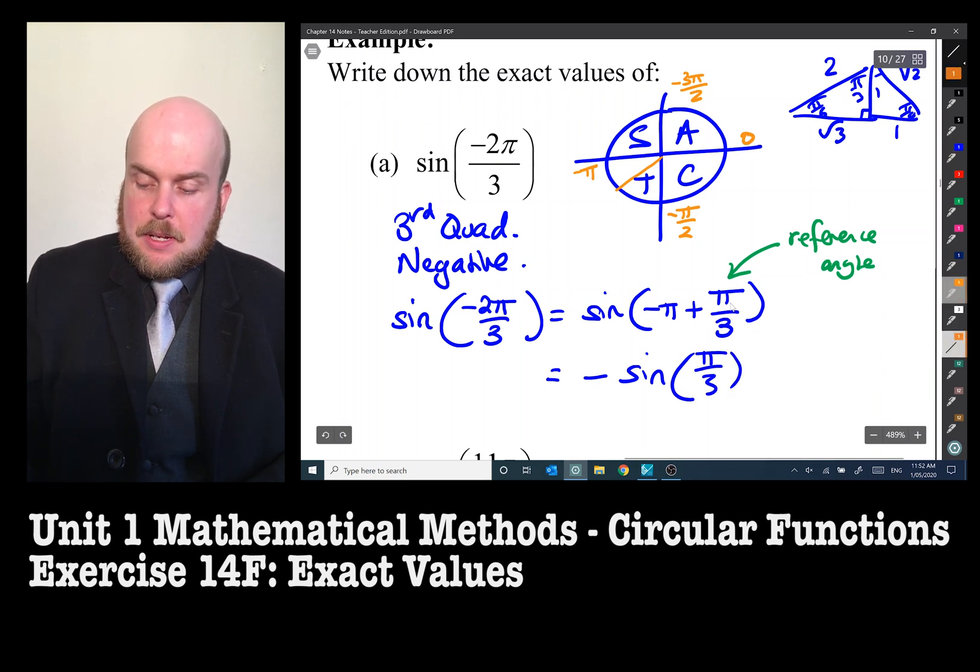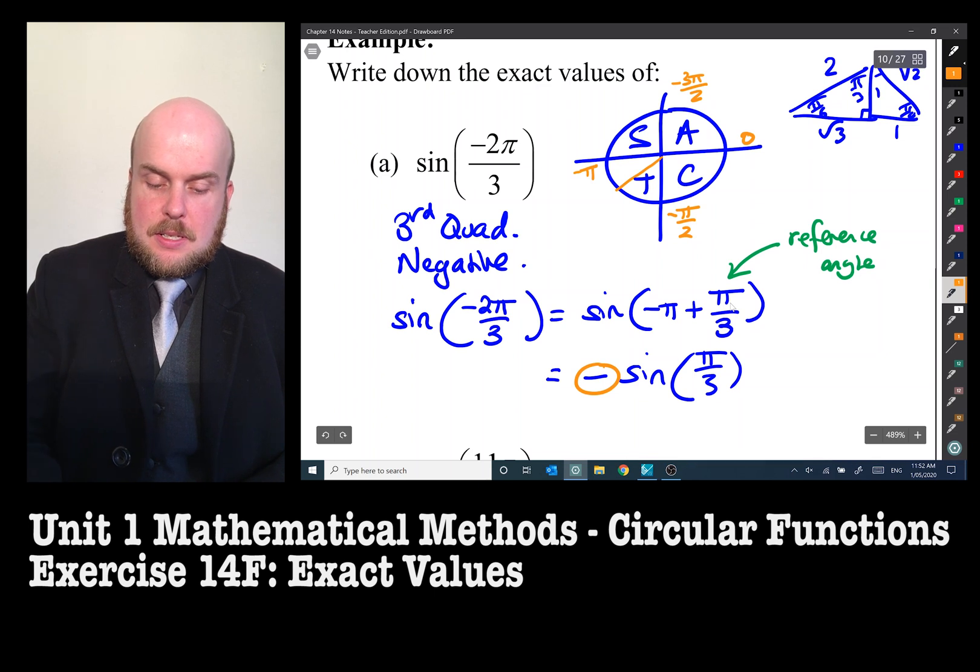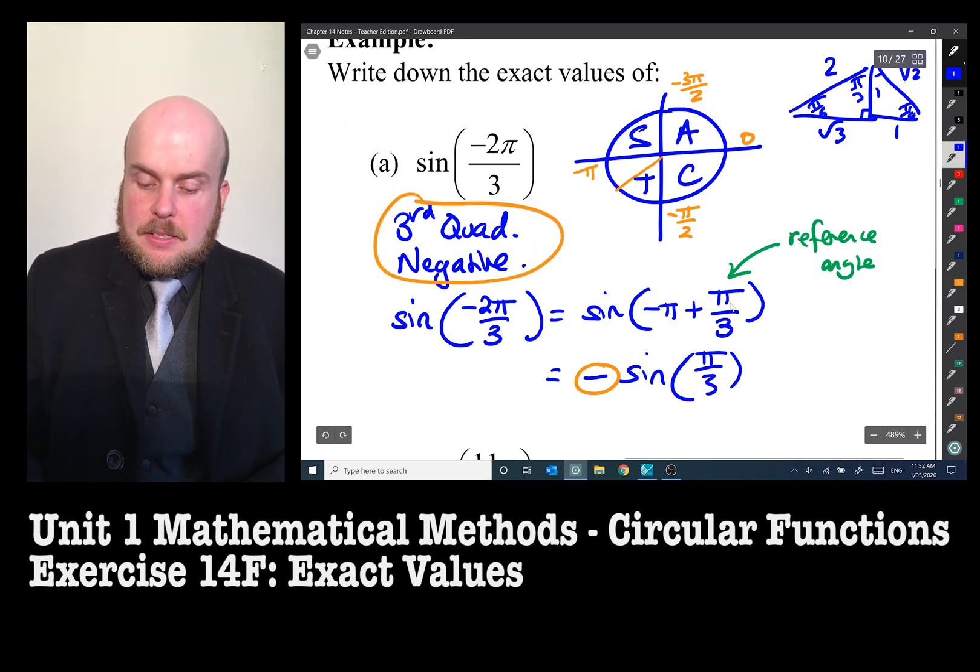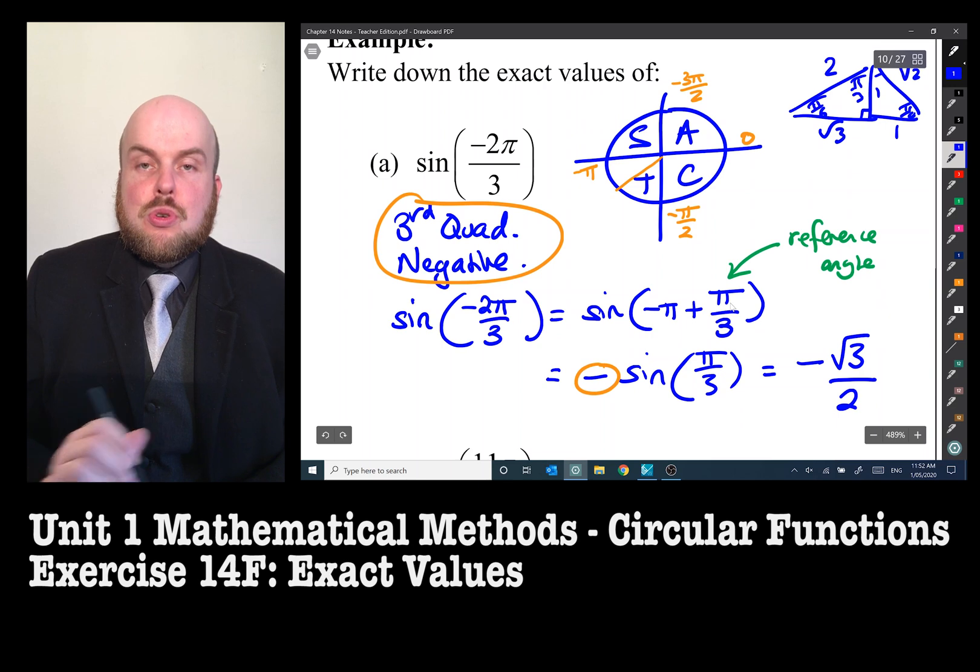The reason why it's negative is because it's in the third quadrant. So just to remind us, that's where it is. So this is equal to negative root three over two.